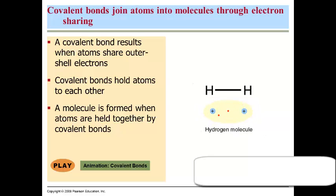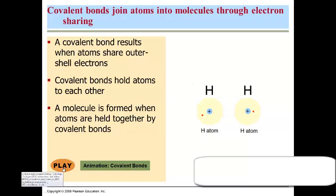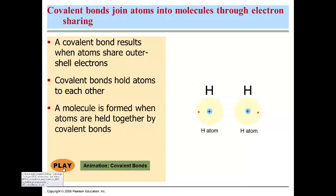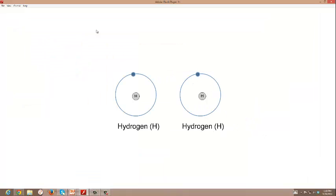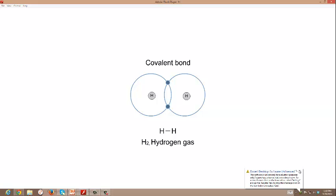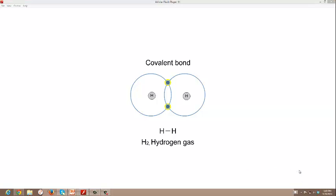Let's take a look at the animation concerning covalent bonding. A covalent bond is the sharing of a pair of outer shell electrons by two atoms. For example, each of these hydrogen atoms has one electron in its outer shell, but needs two electrons to complete its outer shell. If the two hydrogen atoms share electrons, they can both complete their outer shell. The shared pair of electrons constitutes a covalent bond, shown in shorthand as a line. The covalently bonded hydrogen atoms form a molecule of hydrogen gas.